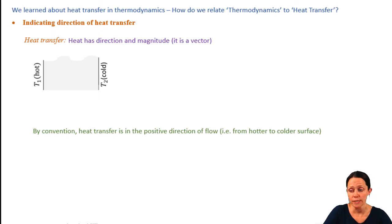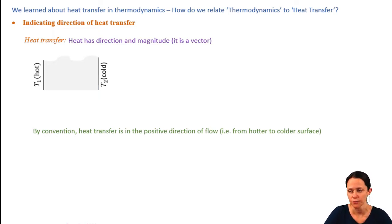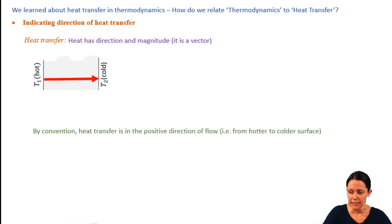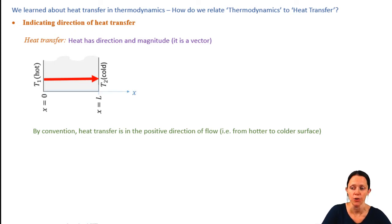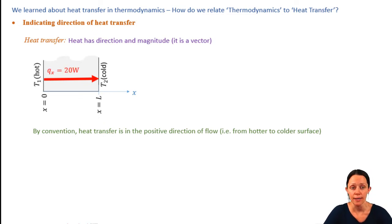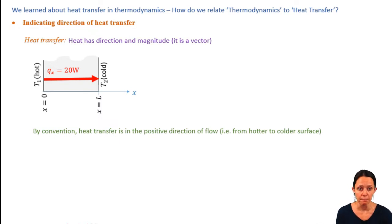Say you have a slab, and on one side it's hot and on one side it's cold. Heat is going to flow from hot to cold, as required by the second law of thermodynamics. If we define our coordinate system such that heat is flowing in the direction of the increasing x-axis, then q is a positive quantity. So if the magnitude were 20 watts, this would be a positive 20 watts in the x direction.